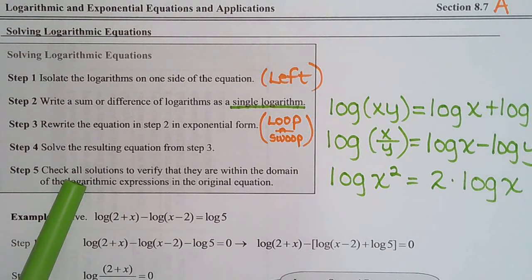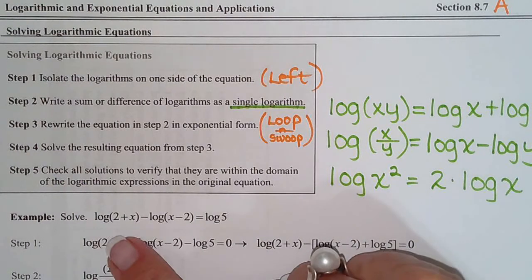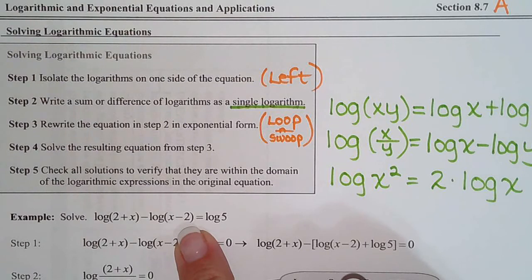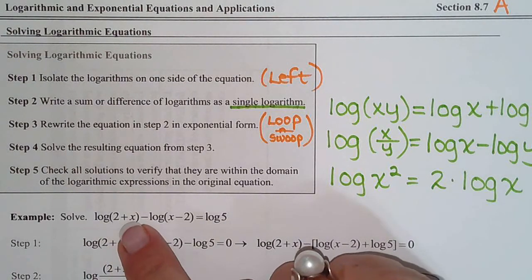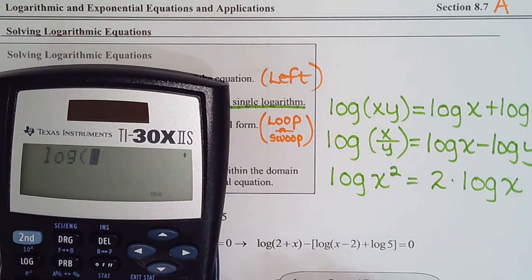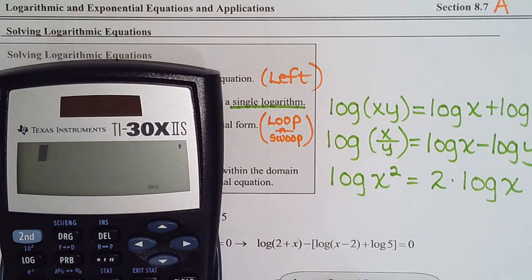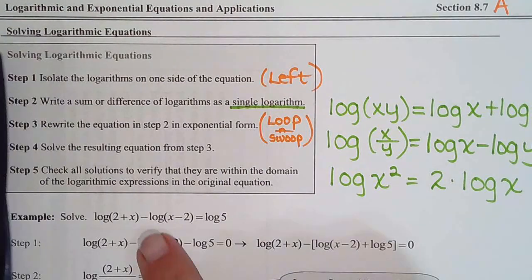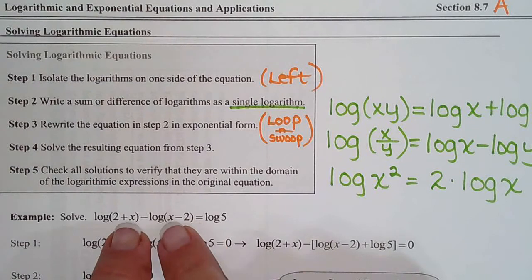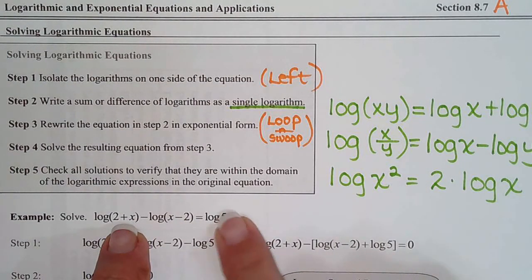We check to make sure the number we get makes the argument positive. Say we got x equals 1: is 2 plus 1 positive? Yes. Is 1 minus 2 positive? No — so we'd have to throw 1 out. If we got 5: 2 plus 5 is positive, and 5 minus 2 is positive, so 5 would be valid. All we have to do is plug the answer into the arguments and make sure they're positive. From section 8.4 we learned you can't take the log of a negative or the log of 0 — the argument of the log has to be positive, otherwise it's undefined. That's why we check — we need all the original arguments to be positive.